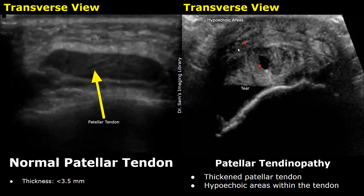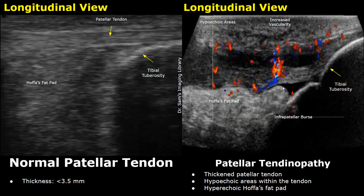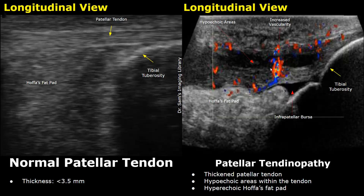The tendon is filled with hypoechoic areas as well as an anechoic area representing a tear. On color Doppler, increased Doppler signals will be found within the tendon in patellar tendinopathy, indicating increased vascularity due to inflammation. The tendon is thickened and has tears and hypoechoic areas. The Hofas fat pad is significantly hyperechoic and there is a significant amount of fluid accumulation in the infrapatellar bursa.